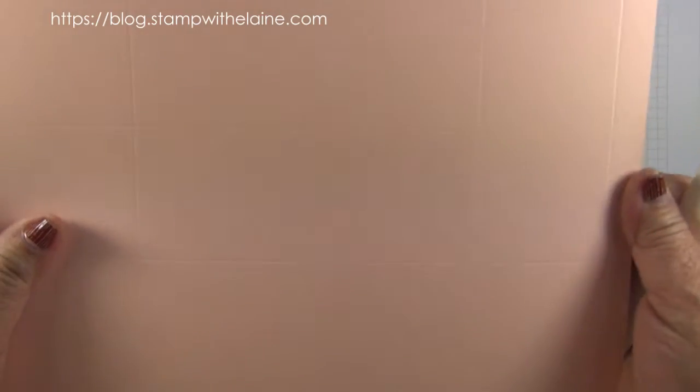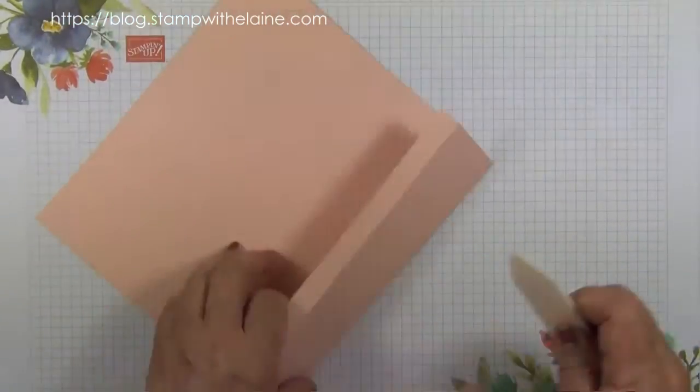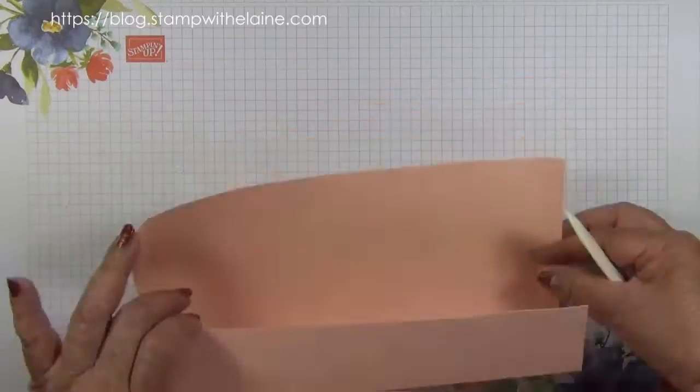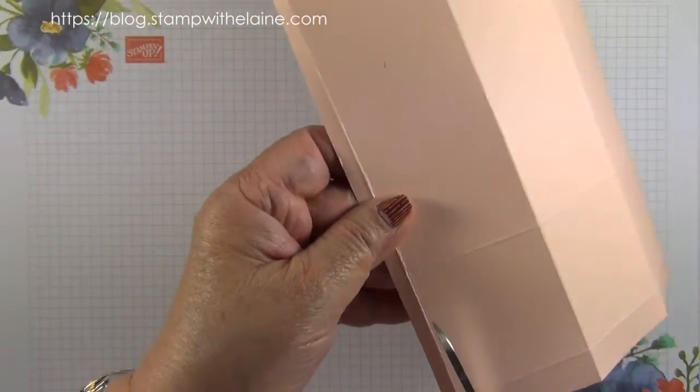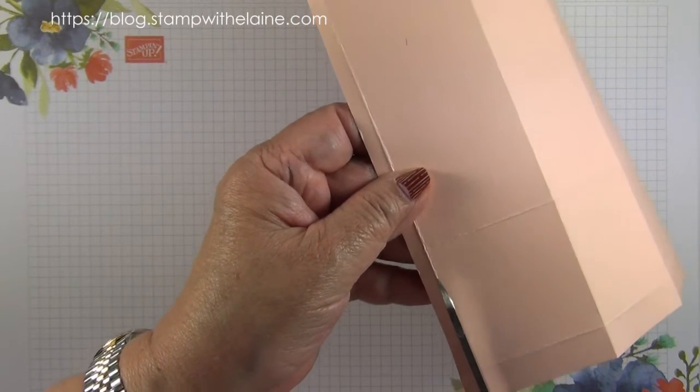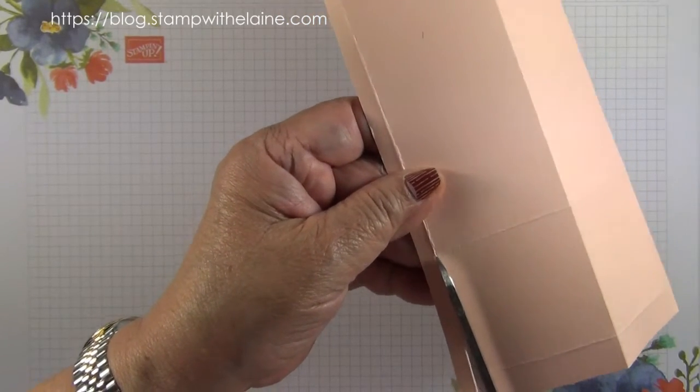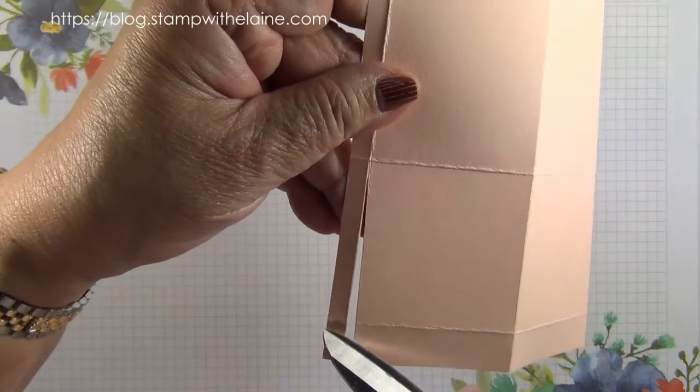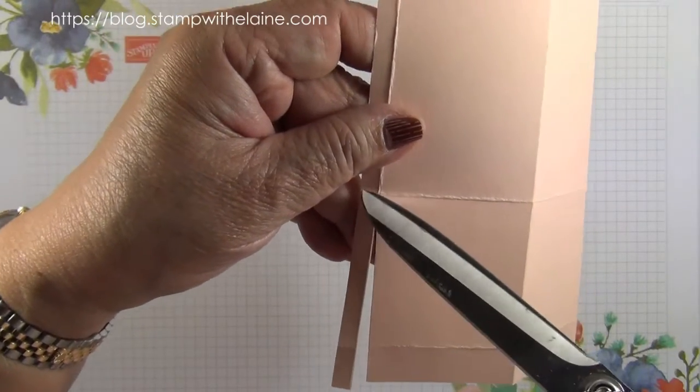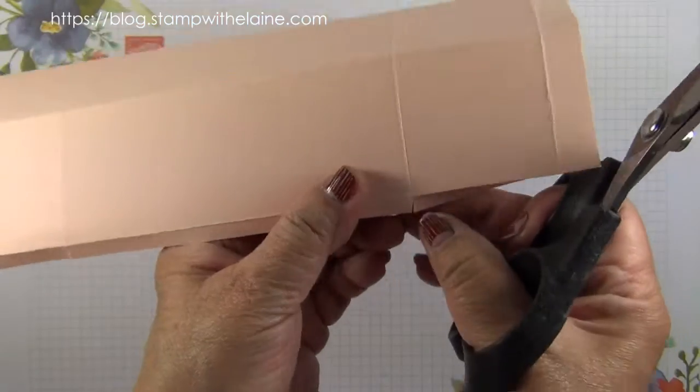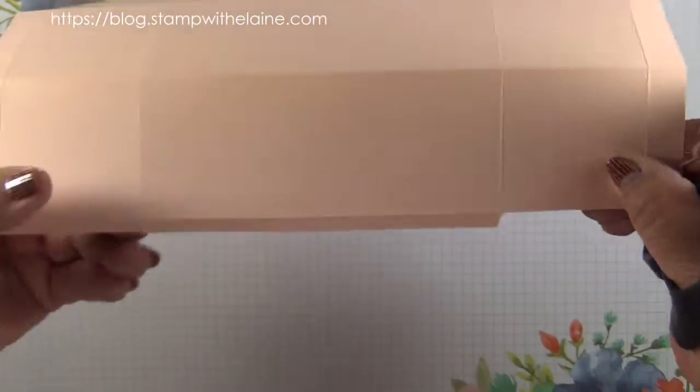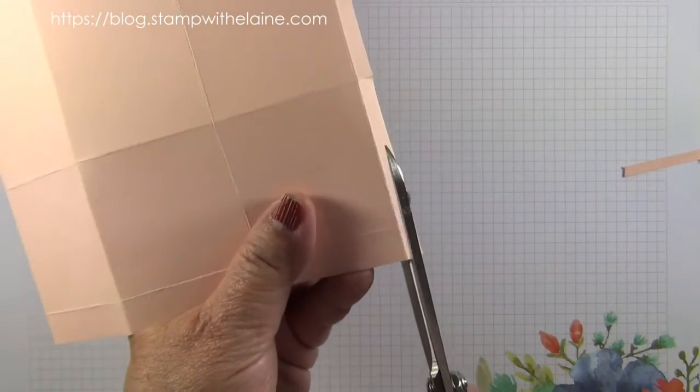I'm going to burnish the lines because it's difficult for you to see. Now with the quarter inch score line on your left, you want to take out this rectangle here. You're cutting up two score lines, the half inch score line up to the second score line to create your tab. You do the same at the opposite end.